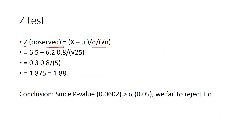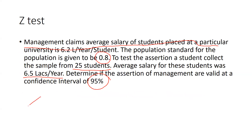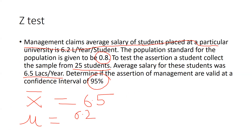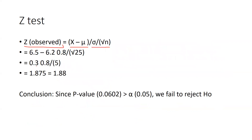We will put in all the values. x̄ (sample mean) is already given as 6.5. μ is given as 6.2. Standard deviation is given as 0.8. n, the total sample size, is 25. So the calculation is: (6.5 − 6.2) divided by (0.8 divided by square root of 25).